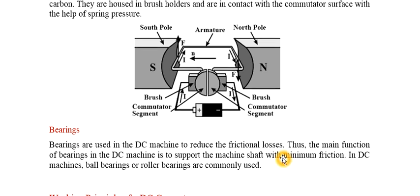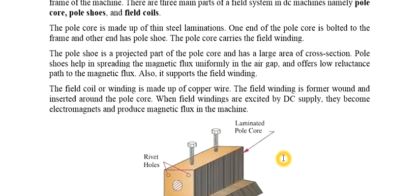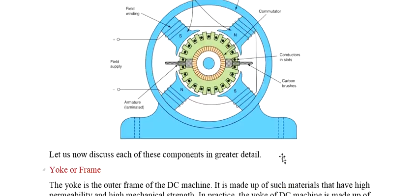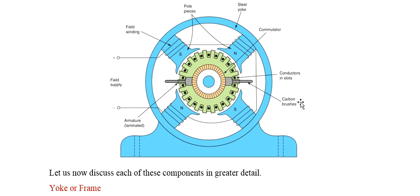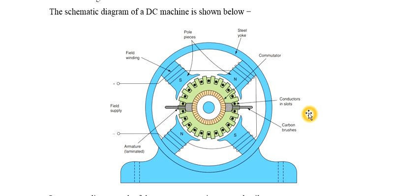This covers the construction of the DC machine. The major components are the yoke, poles, field windings, armature, armature windings, commutator, and brushes, through which current can be collected or supplied for different operations of the DC machine.